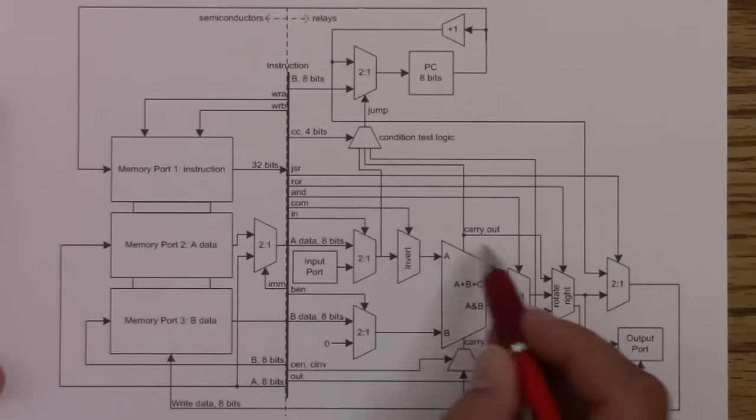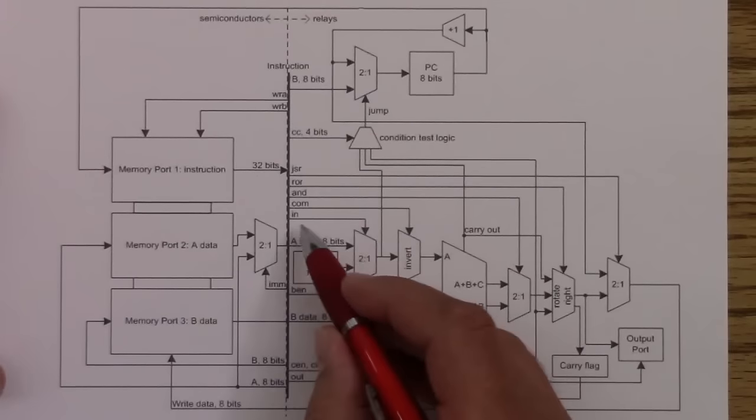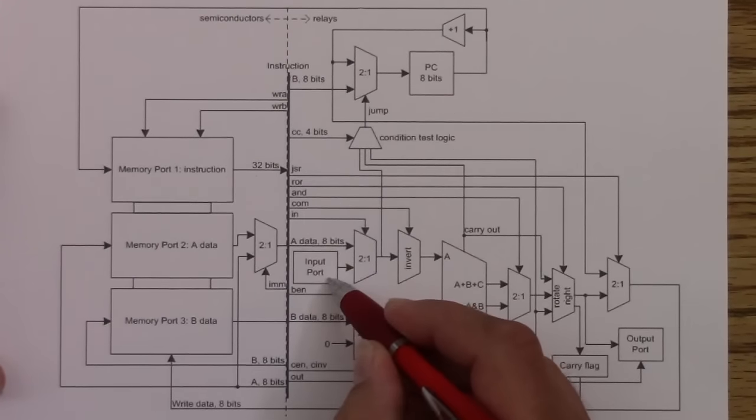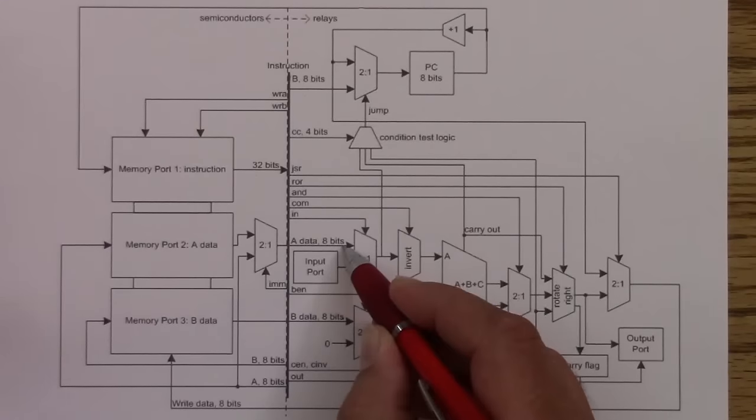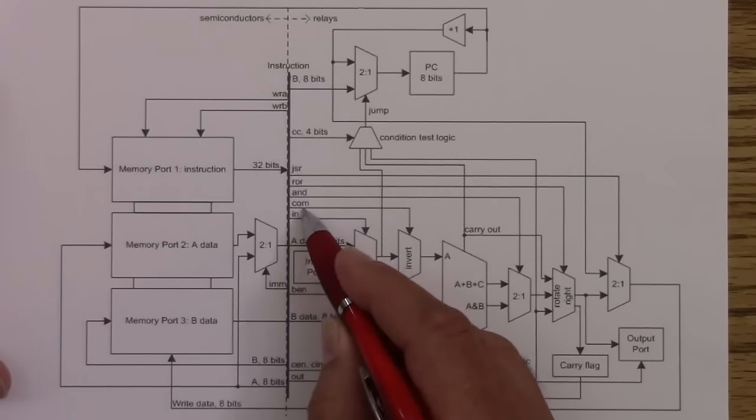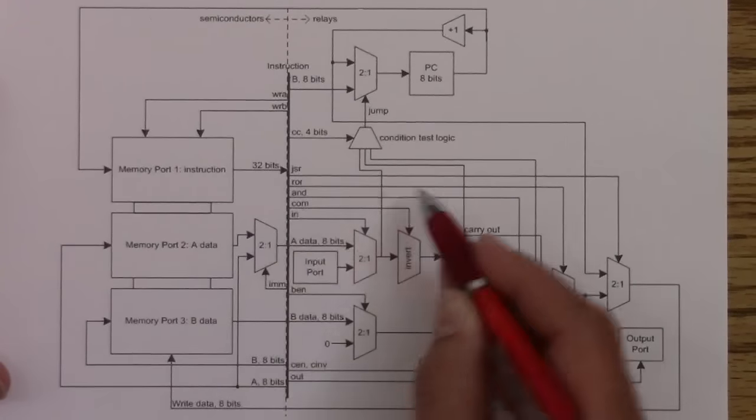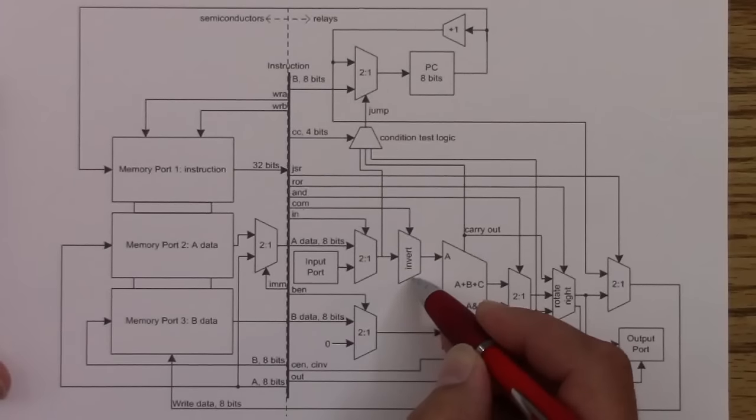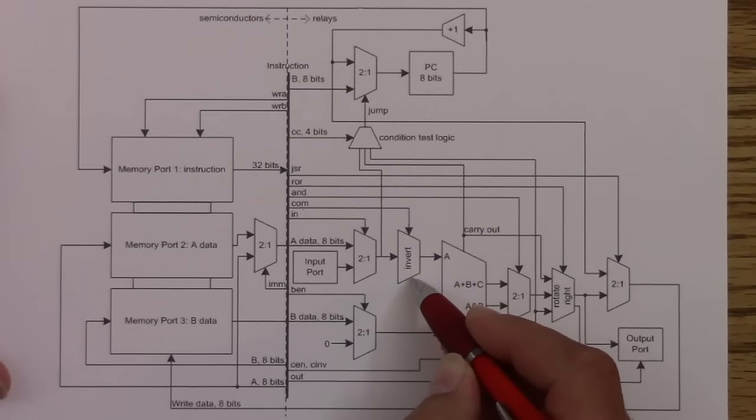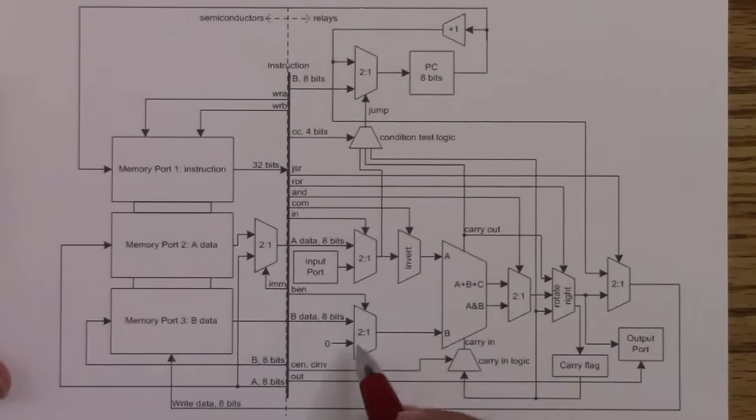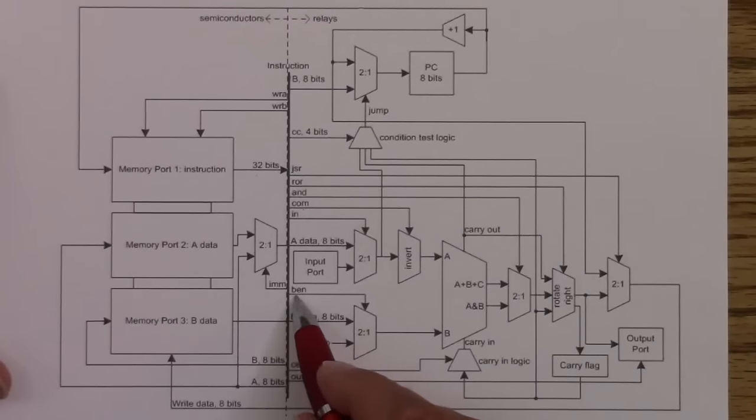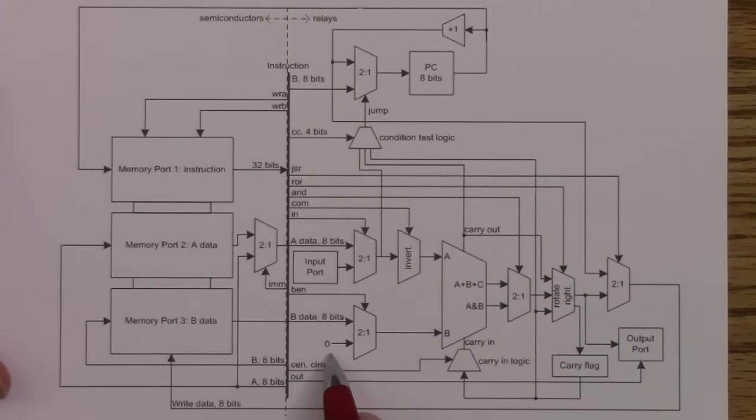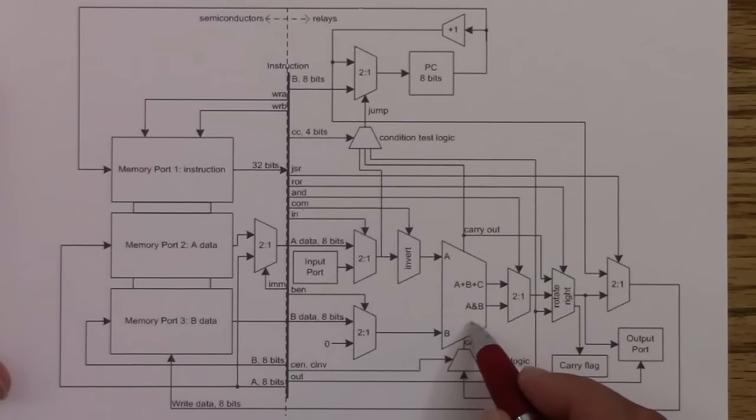Now we have a bunch of control bits. First of all, this in-bit, we can select, are we going to read from the input port, or are we going to read from the memory as usual? Next is the complement bit, which inverts all the bits in the A data path. On the B side, we have the enable bit, B enable, which means we either have zero going to the B side of the ALU, or we have the memory that we read.